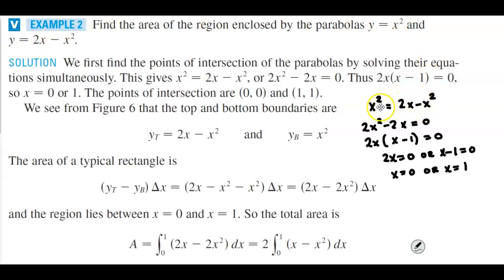So setting them equal to each other, letting it equal zero, and solving gives us 2x equals zero and x minus one equals zero.